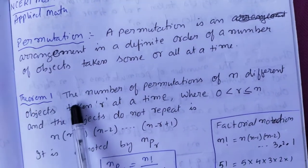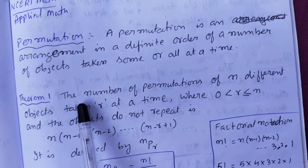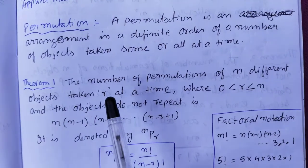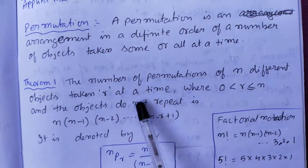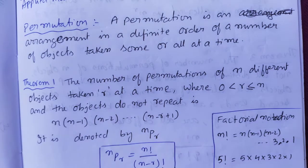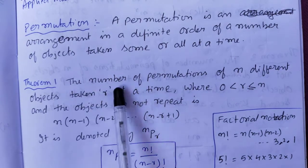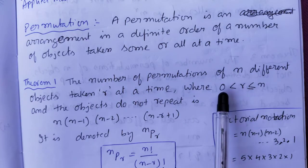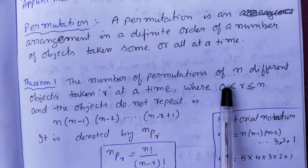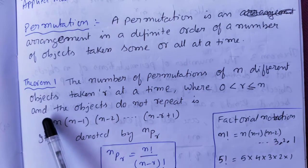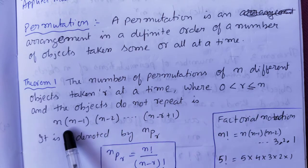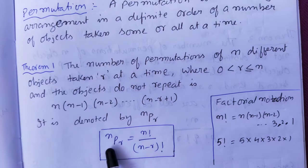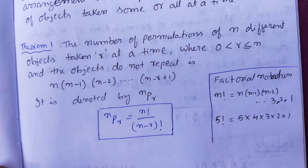In the last exercise we did not use a formula — we solved directly. But in exercises 7.2 and 7.3 we will apply the formula. The number of permutations of N different objects taken R at a time, where R is from 0 to N and objects do not repeat, is denoted by NPR.